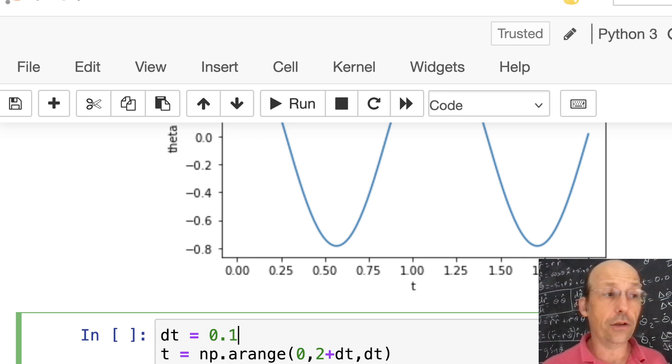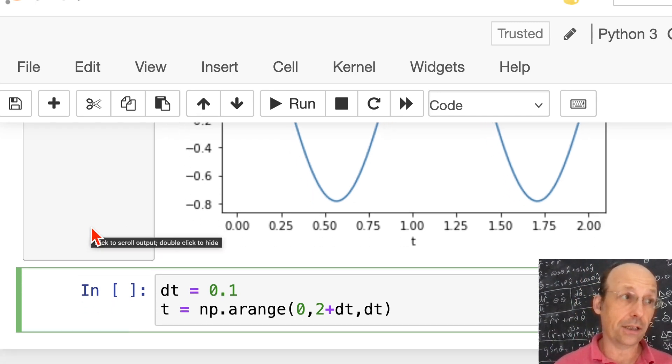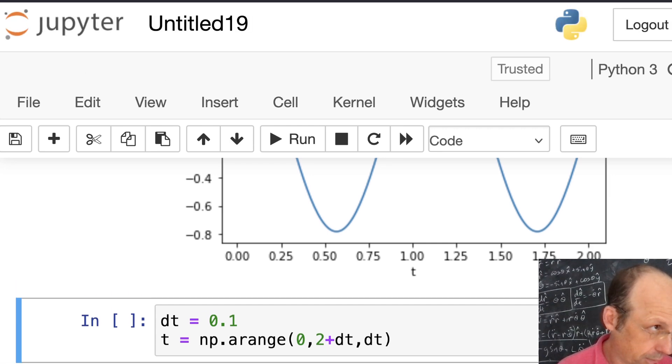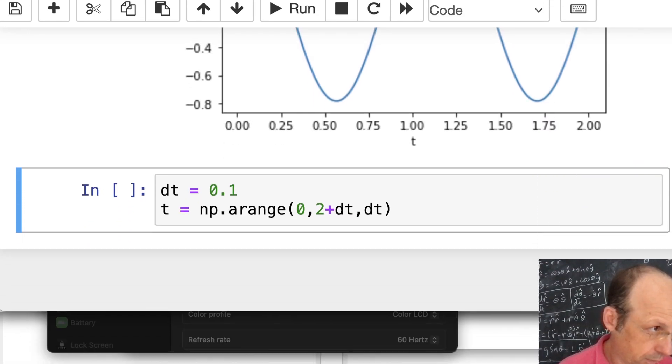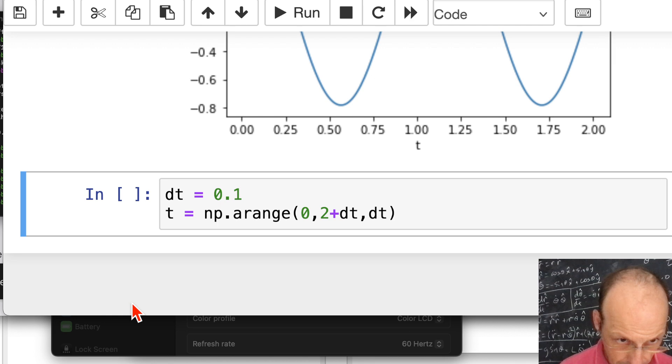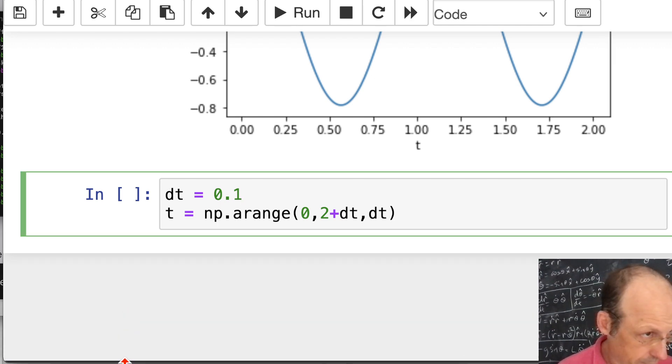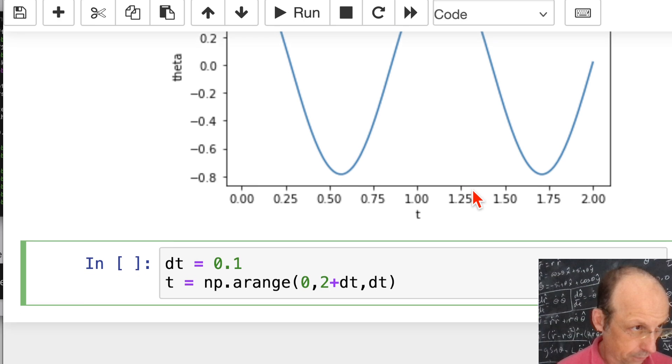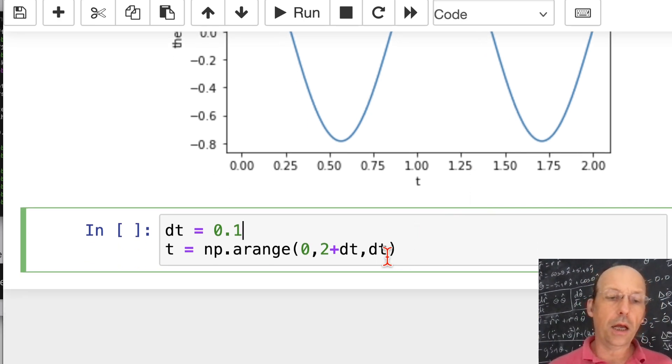Now what I'm going to do is plt.plot. plt.plot. tp on the horizontal axis. theta_p on the vertical axis. And then I need to show that plot. plt.show. And there we go. And again, my time step's really too large. We can fix that up here. Put this at 0.01. And there we go. Same thing. Cool. Now for our second way.